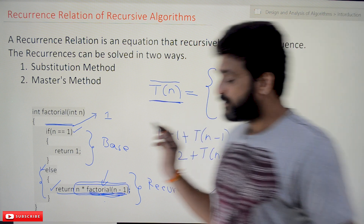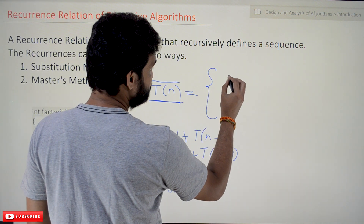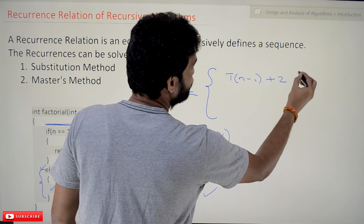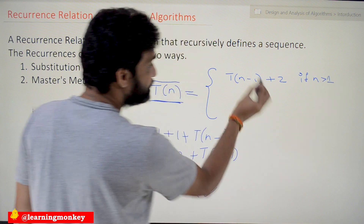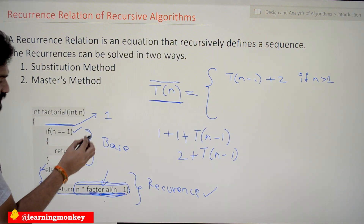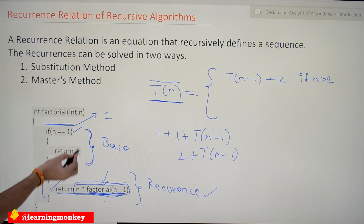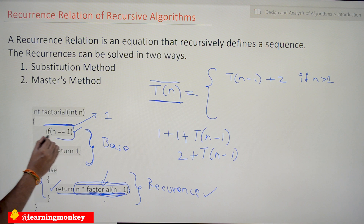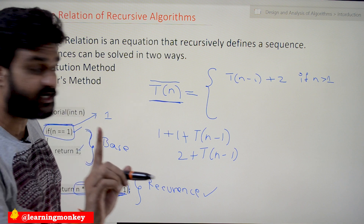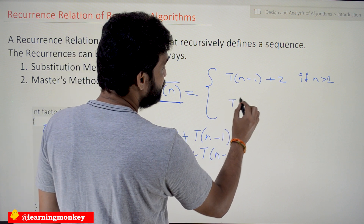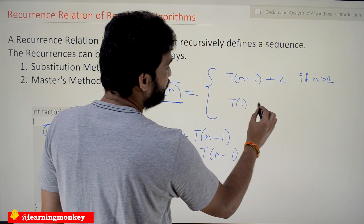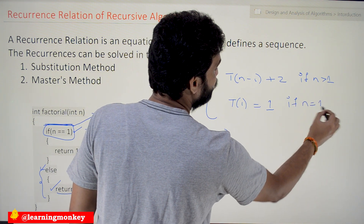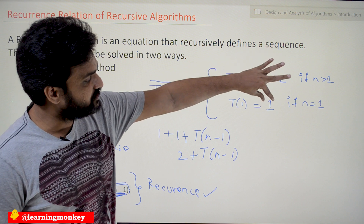The next part is the base part. What is the amount of time taken — how many program steps are executed — for the base case? When n is equal to 1, only one step is executed: the return statement. So T(1) = 1, when n is equal to 1. No additional steps need to be written; we simply write it as 1.